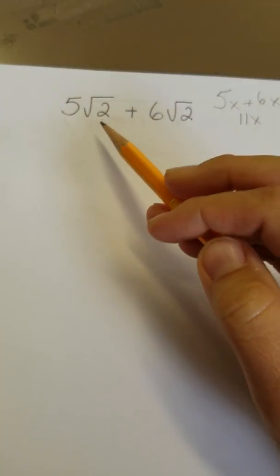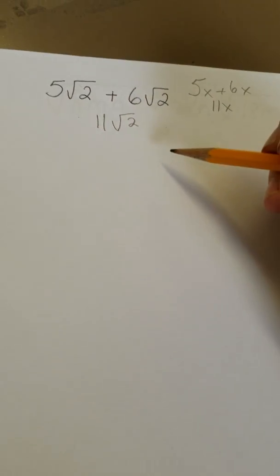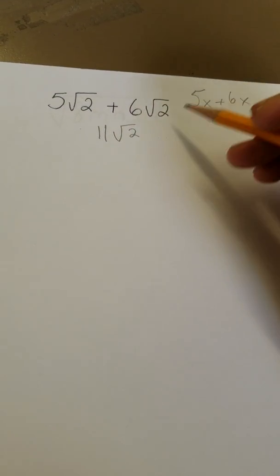Same thing here. 5 radical 2 plus 6 radical 2, 11 radical 2. Can't break down a 2, so I'm done.